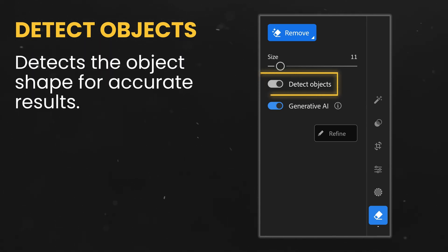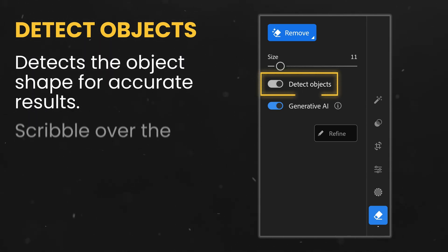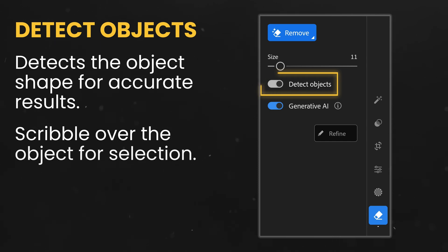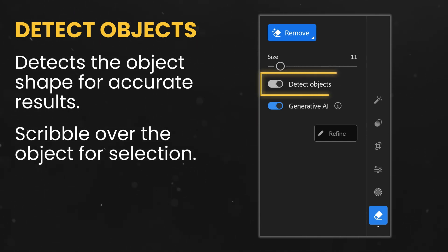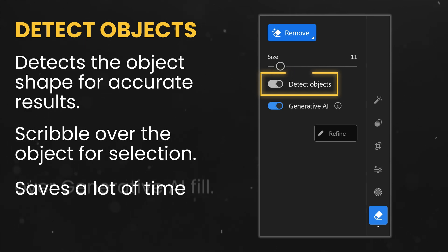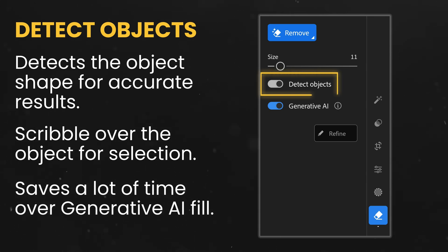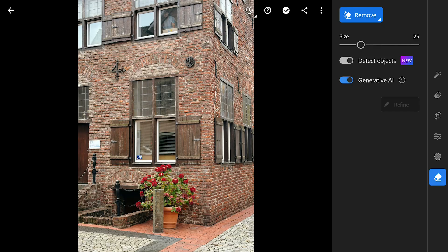Instead of struggling to fine-tune your selections, you can just circle or scribble over an object and the tool does the heavy lifting for you. This certainly saves time if you have weird-shaped objects that don't always work with only the Generative AI option.